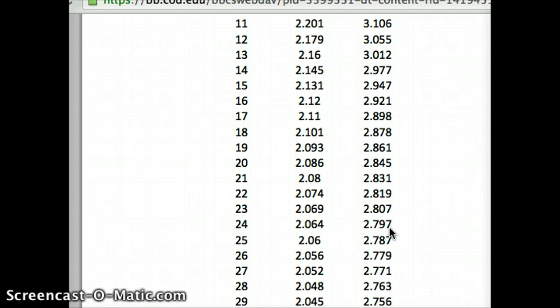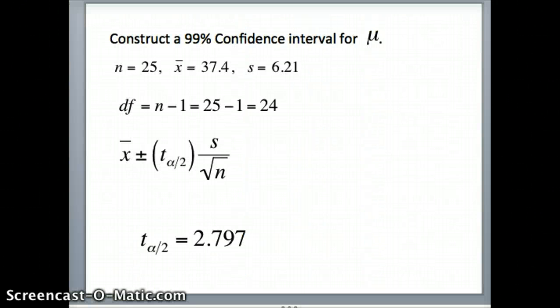That's the number that we are going to need for a 99% confidence interval. So we've got x-bar plus or minus t alpha by 2 times s over root n. t alpha by 2 is 2.797. That's the number that we need to construct our 99% confidence interval.